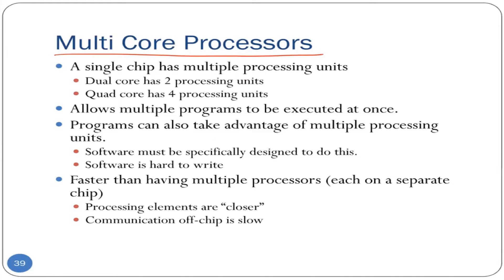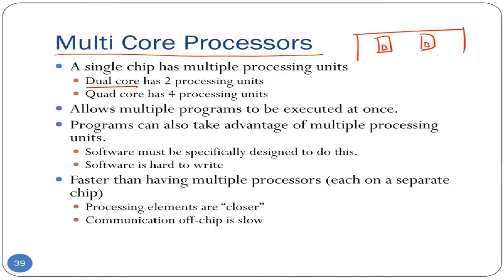A multi-core processor basically implies that on a single chip, we have integrated or fabricated multiple independent processors — CPUs. For instance, if you have a dual core machine, that means on a single chip you have two fully functional cores, which are basically fully functional CPUs with all their caches, cache controllers, and everything integrated on that single chip. Each processor may have its own private cache, and on the chip itself we may have a shared cache that both processors access. Off the chip, you will have more RAM and so forth.